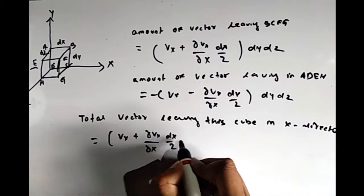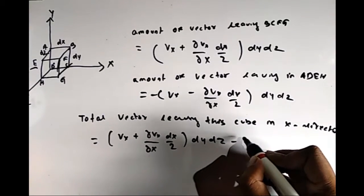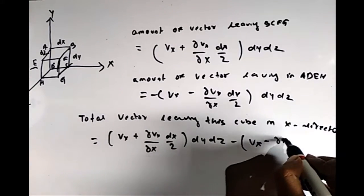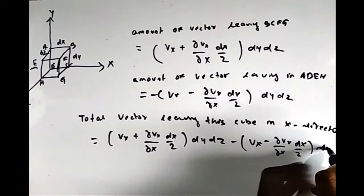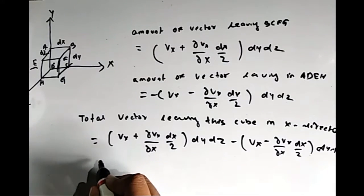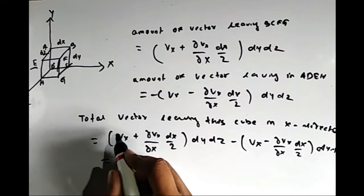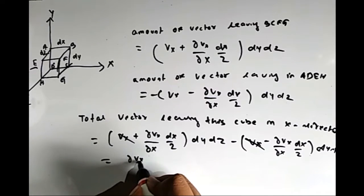Now, the total vector leaving in the x direction is equal to the sum of the vector field leaving through VCFG plus the vector field leaving through AEHD, which is now given by del Vx by del x times dx dy dz.